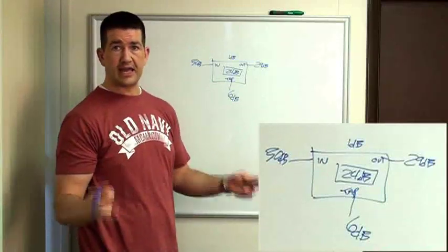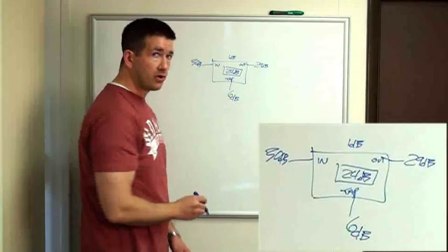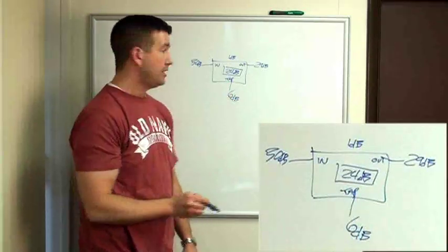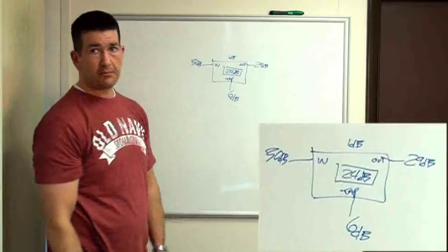Now, if this was a tap that had 2 ports or 4 ports or 8 ports, each tap is still going to work the same way. Whatever value is on the front of that tap, you deduct that from your signal coming into the tap and that will give you the output of it.